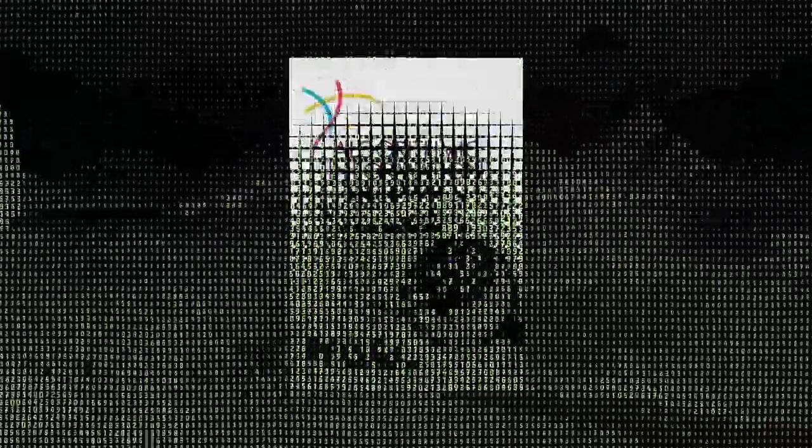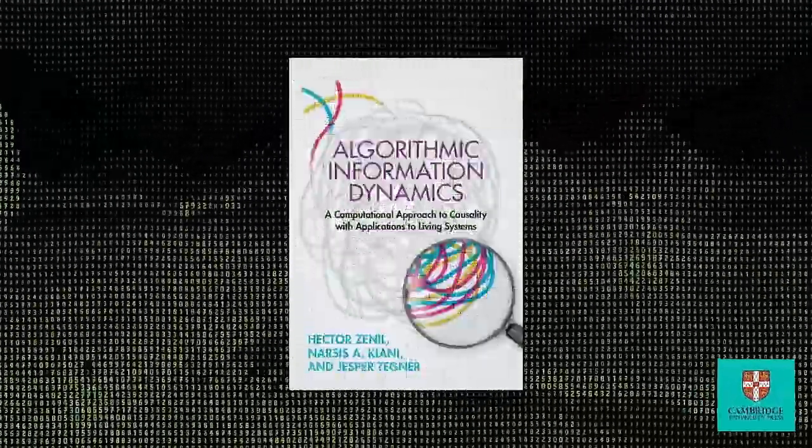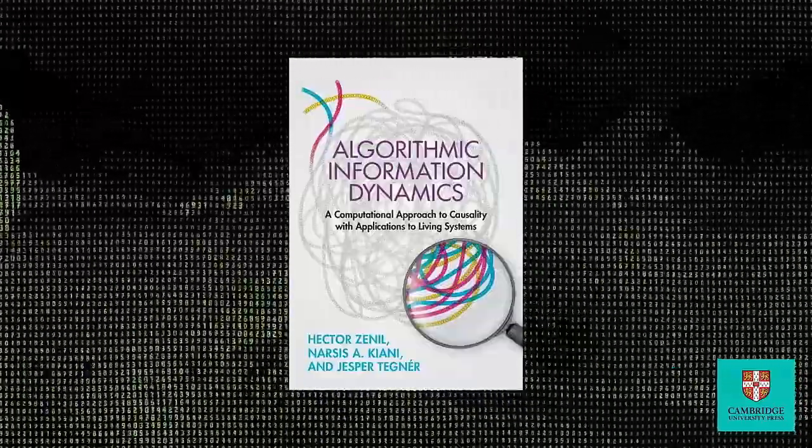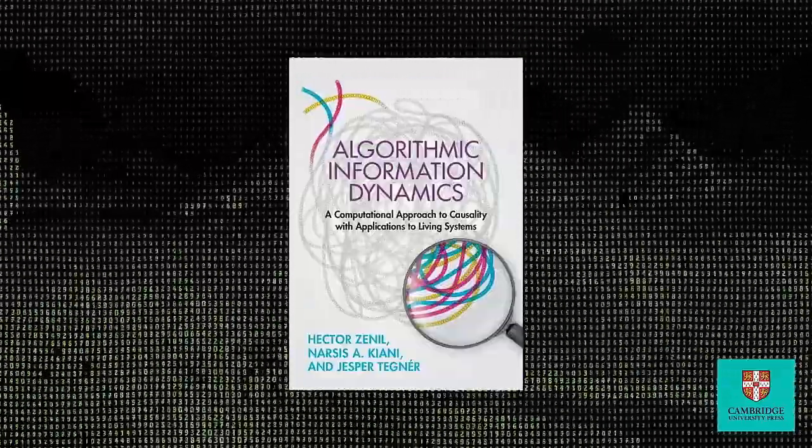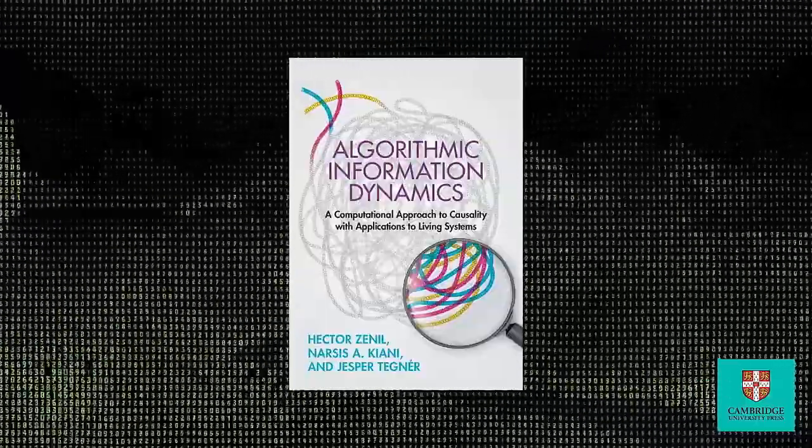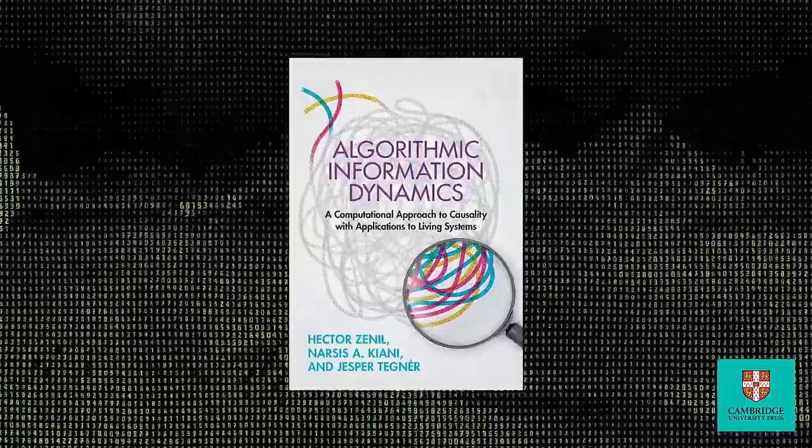Algorithmic information dynamics, published by Cambridge University Press, is a fundamental new way to see and explore the world, a hitchhiker's handbook for scientists and philosophers alike to deconvolute the complexities of reality.